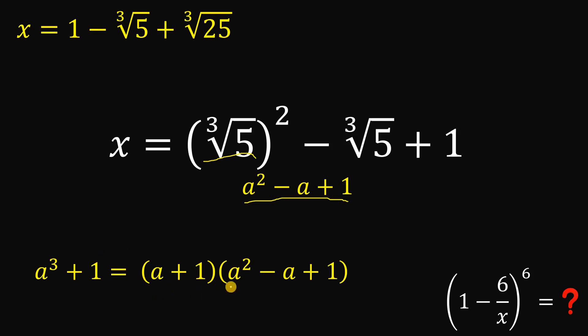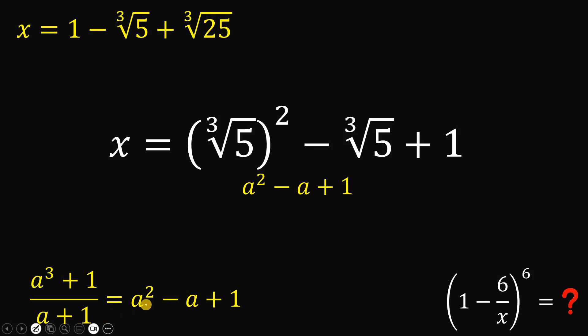And now, we can find the value of a squared minus a plus 1. If we divide both sides by a plus 1, we get that a squared minus a plus 1 is equivalent to a cubed plus 1 all over a plus 1.